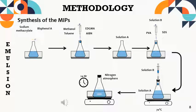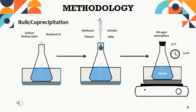Moving on to the methodology, we have first the synthesis of polymers, carried out by three methods. The first was emulsion, where sodium methacrylate was added as monomer, BPA as the template molecule, methanol and toluene as solvent, EGDMA as cross-linking agent, and AIBN as initiator. This solution was added to a surfactant solution consisting of polyvinyl alcohol and SDS, added dropwise. The reaction was left in a glycerin bath at 70°C for 24 hours under nitrogen atmosphere. The following methods were bulk and co-precipitation, following the same solution methodology as emulsion, with the difference that in the co-precipitation method five times more solvent and stirring is added, while the bulk method uses the same amount of solvent and without agitation.